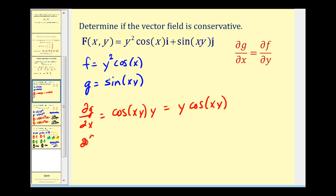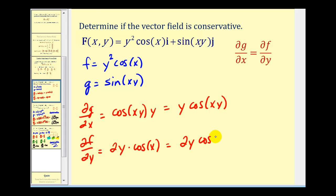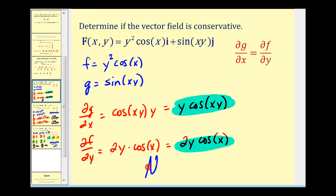Now for the partial of f with respect to y, treating x as a constant, we get two y times cosine x. Obviously these are not equal to each other, and therefore this vector field is not conservative.